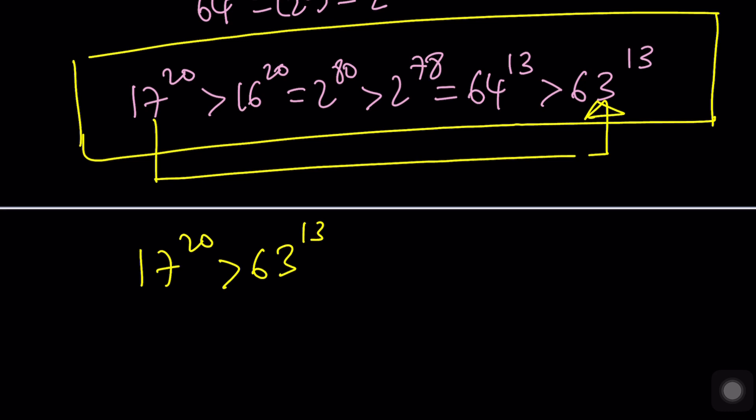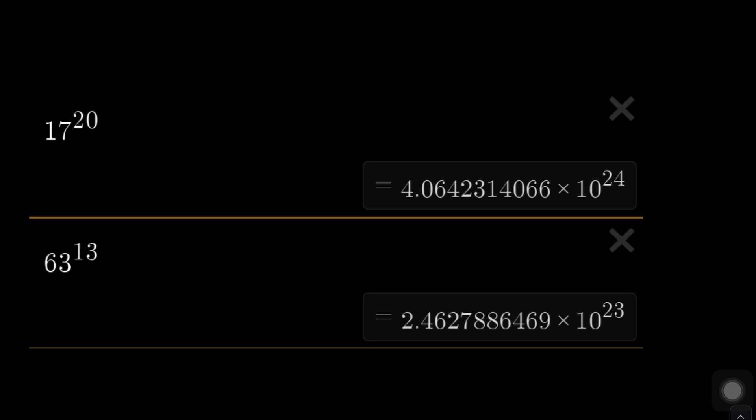Base is what you're multiplying, but the exponent is how many times you have that base — so it makes a huge difference. Let's check the numerical values. 17^20 is about 16 times bigger than 63^13 — roughly 40 divided by 2.5, which is 80 divided by 5, so about 16 times bigger.